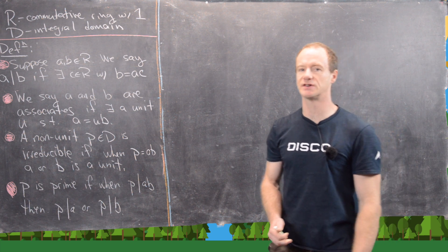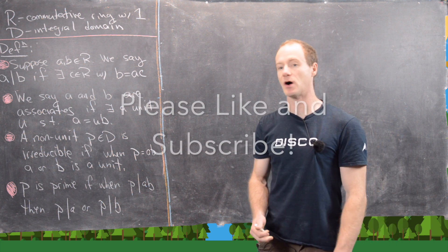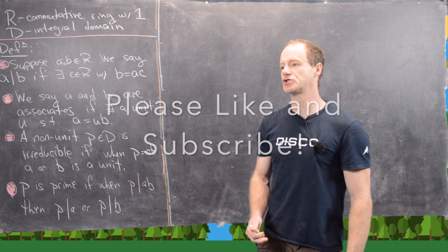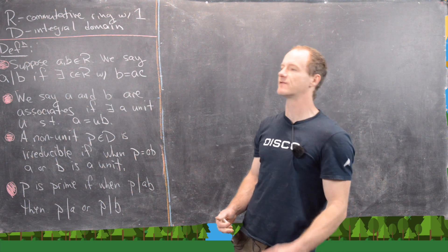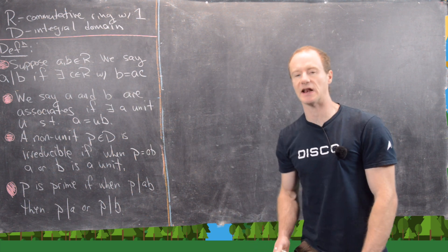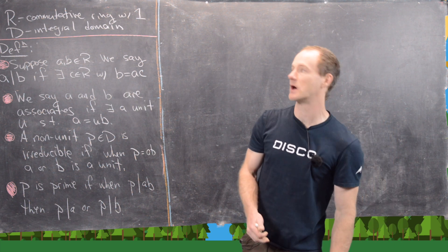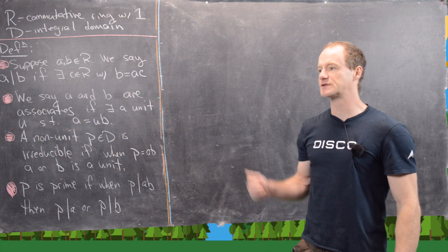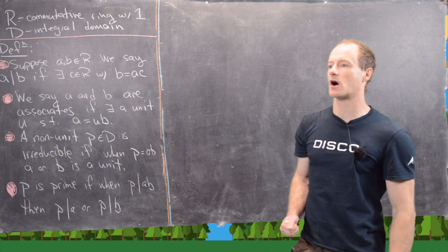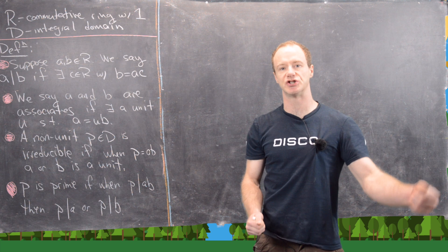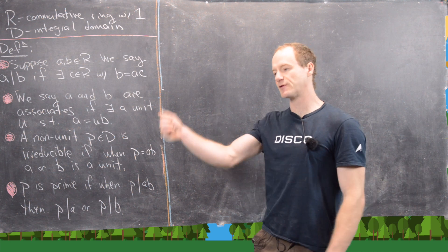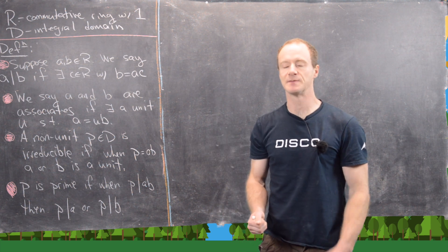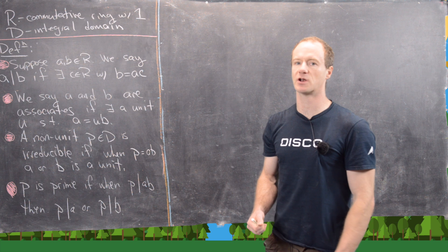We also know about factorizations in polynomial rings over a field — there's a notion of a greatest common divisor, a Euclidean algorithm, and so forth. Some of those things carry over to arbitrary integral domains and others don't, and some go on to special types of integral domains. That's what we want to look at.